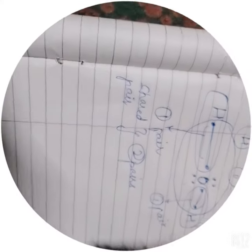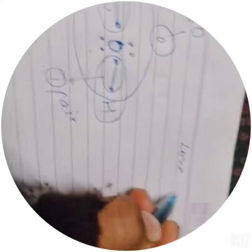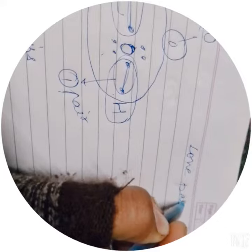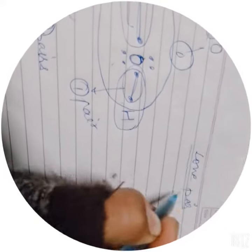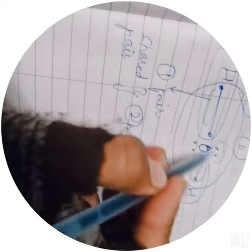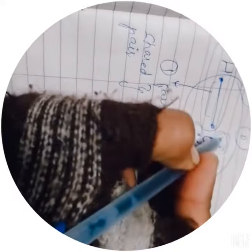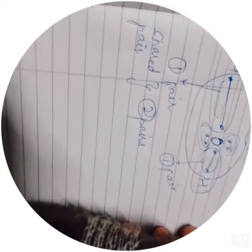If we talk about lone pair, lone pair which does not take part in sharing. So let's see, this is taking part in sharing. 2 pairs.